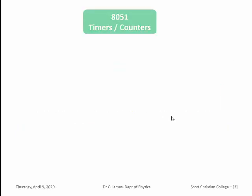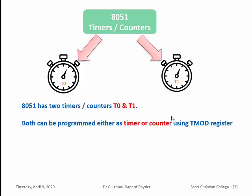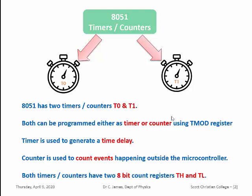8051 has an inbuilt facility for counting or timing operation. It has two timers or counters, namely T0 and T1. Both counters or timers can be programmed either as a timer or as a counter using the TMOD register. The timer is used to generate a time delay, whereas the counter is used to count events happening outside the microcontroller. Both timers or counters have two 8-bit count registers called TH and TL.